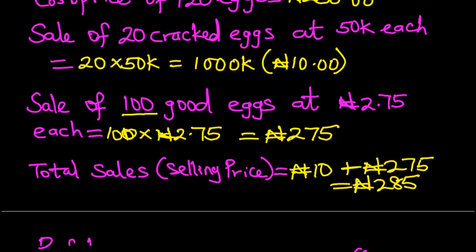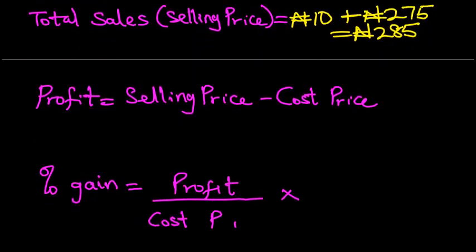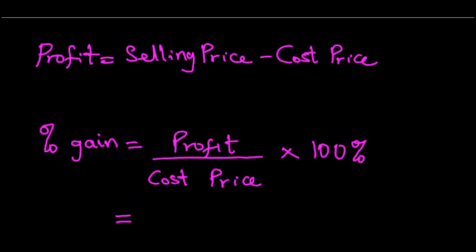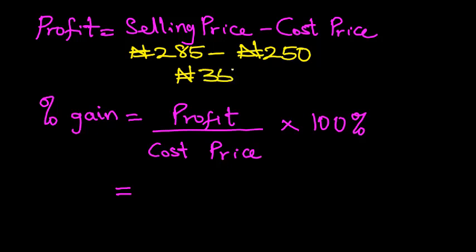With this figure for selling price, it will be easy for us to get the profit. How do we get the profit? The formula for getting the profit is selling price minus cost price. The selling price is 285 naira minus the cost price, which is 250 naira. The difference between these two figures is 35 naira. So this is the profit. The profit is otherwise known as gain.